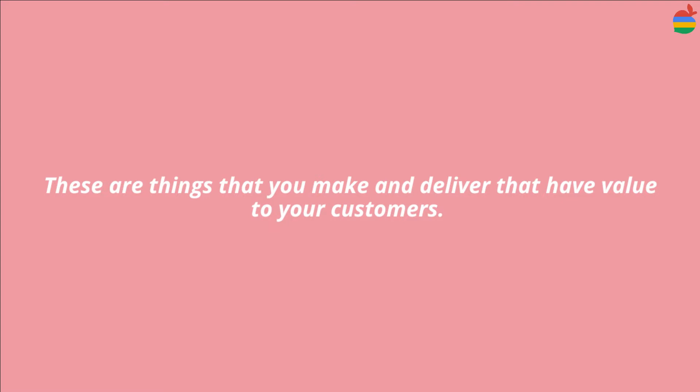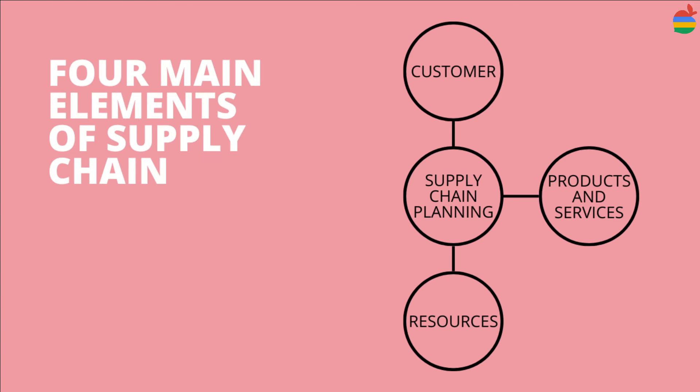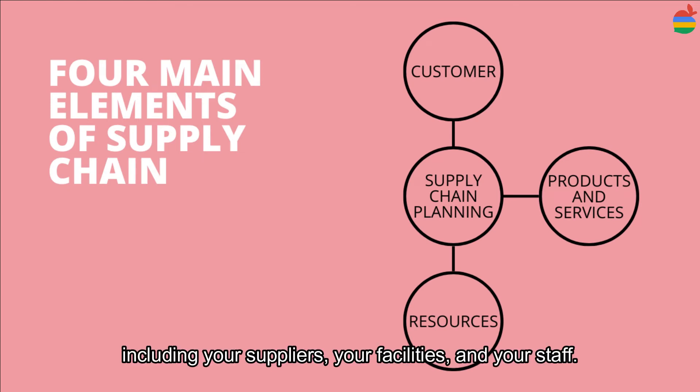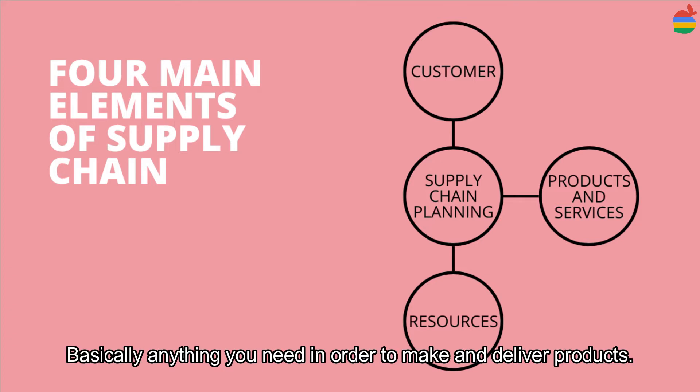The next element is your products or services — these are the things that you make and deliver that have value to your customers. Third, your resources, including your suppliers, your facilities, and your staff — basically anything you need in order to make and deliver products.